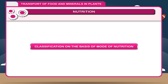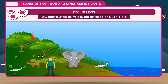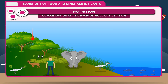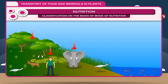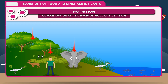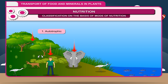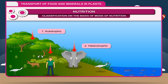Classification on the basis of mode of nutrition: Green plants prepare their own food material. Humans and animals do not prepare their own food but depend upon plants. Thus, on the basis of mode of nutrition, living organisms may be divided into two: 1. Autotrophic, 2. Heterotrophic.